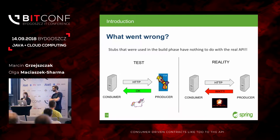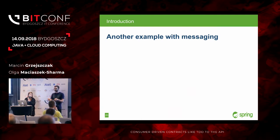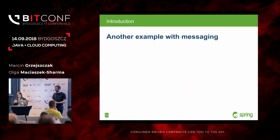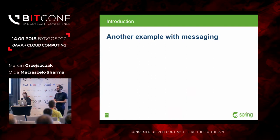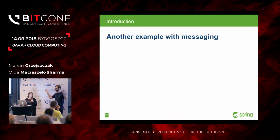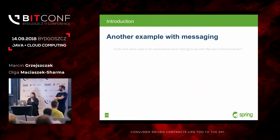There was a situation in one of the companies I worked at where we had the Boy Scout rule. Whenever somebody saw a small thing they could fix, they fixed it. A junior developer saw a typo in the API and decided to fix it. All the integration tests for all consumers of this API were still passing because the stubs contained the typo. Of course they didn't fix the stubs as well. When we went to production, all our consumers were broken.